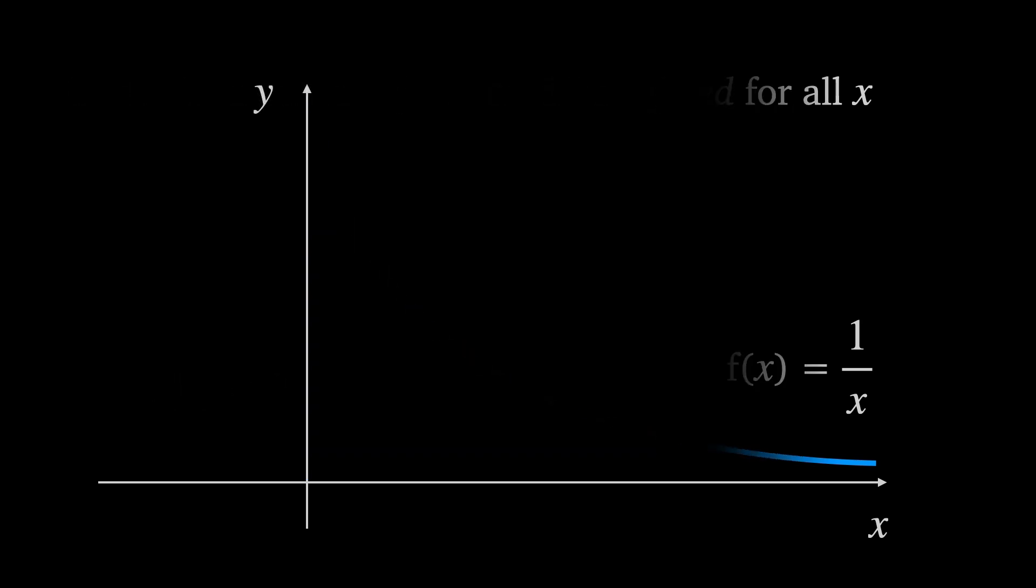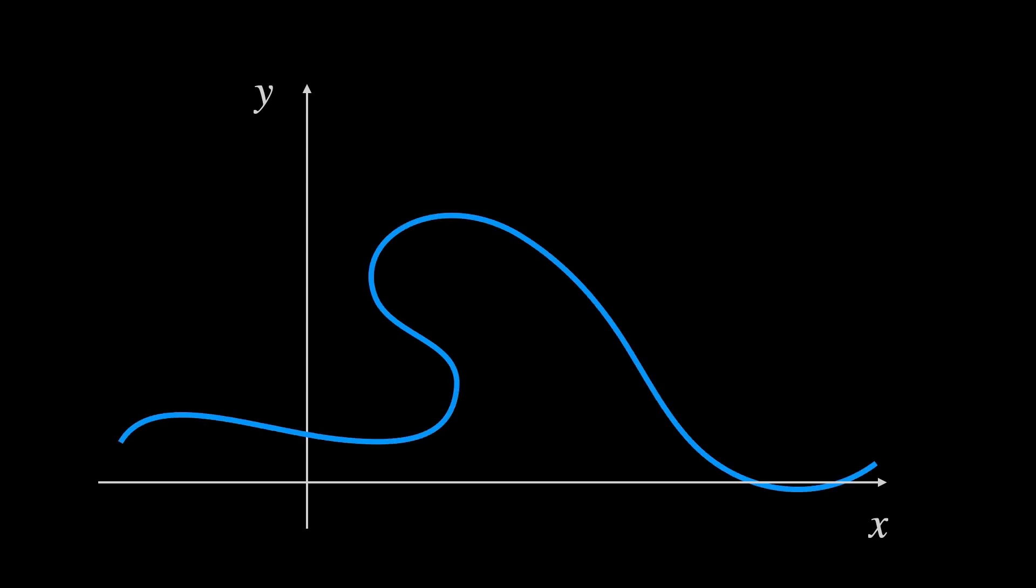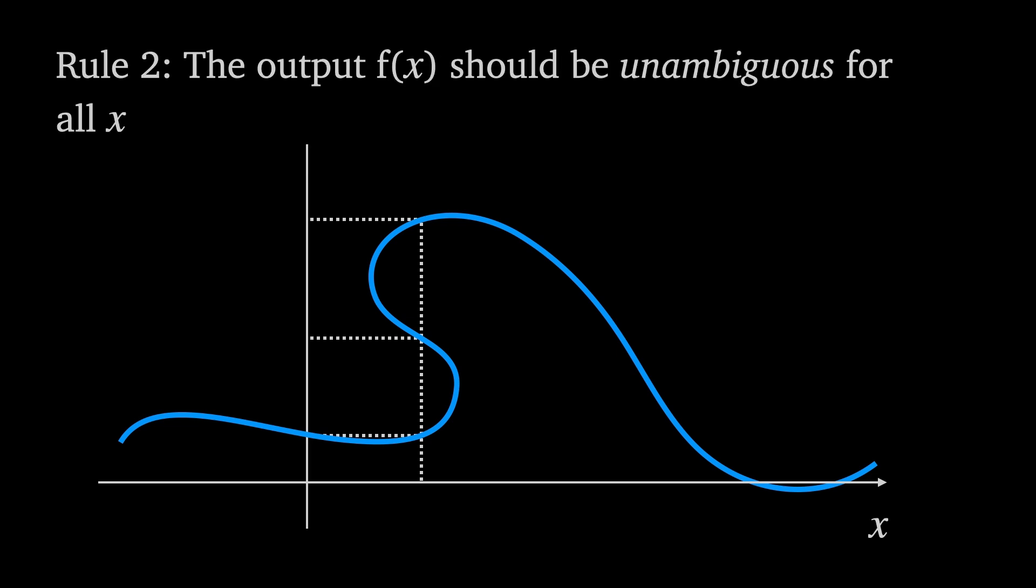That being said, is 1 over x a function? The second issue is that we want to avoid situations like this where there could be multiple outputs for a given input. So let rule 2 be that the output of a function should be unambiguous for all inputs.